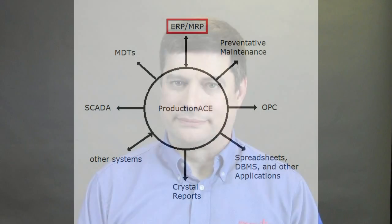The Production ACE system from Production Process integrates with other systems and manufacturing plants. It does this in five ways.